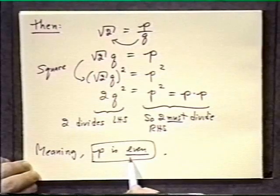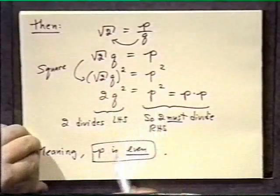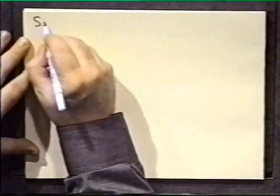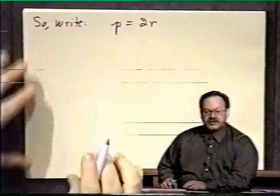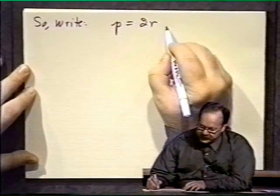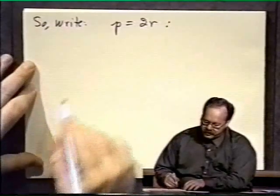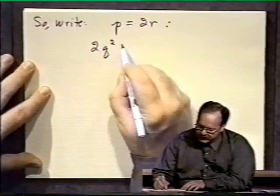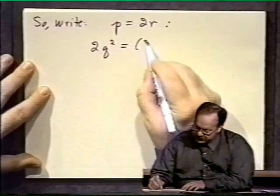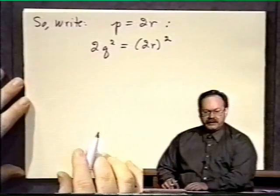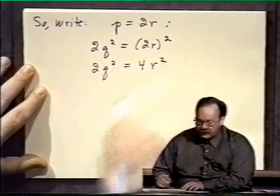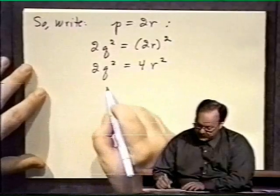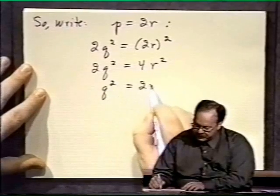If p is even, we can write it as 2 times something, and then we can continue from here and see where that leads. So we can write p equals 2 times r, because it's even, it can be written as a 2 times another natural number. We had previously 2q squared equals p squared. Now p is 2r, so let's substitute that in. We can square that right-hand side. So repeating this, 2q squared will be 4r squared. And then we can divide 2 out of both sides for convenience. So q squared is now 2r squared.